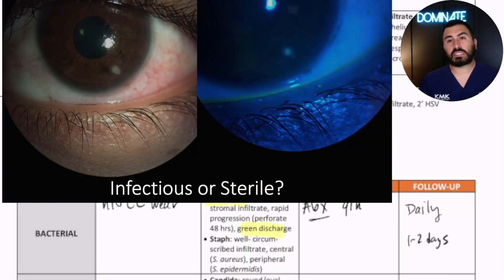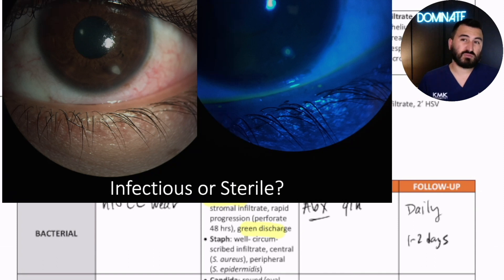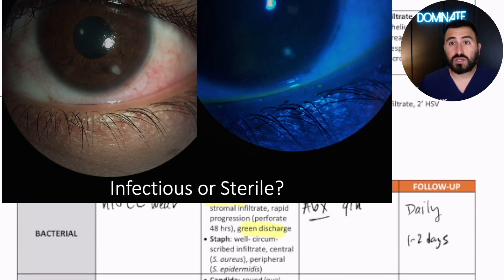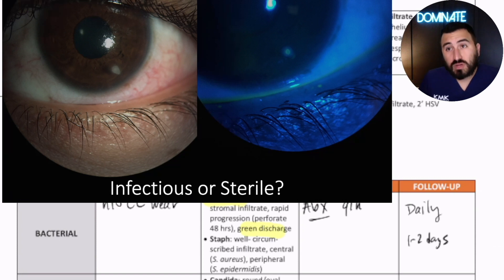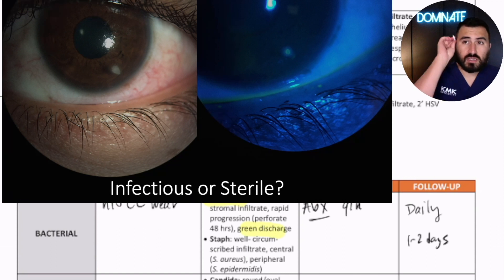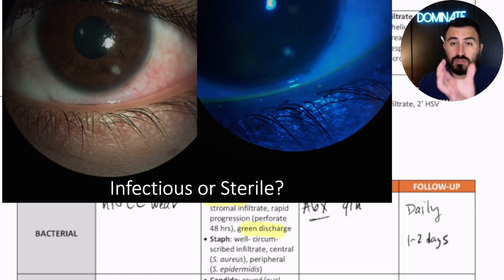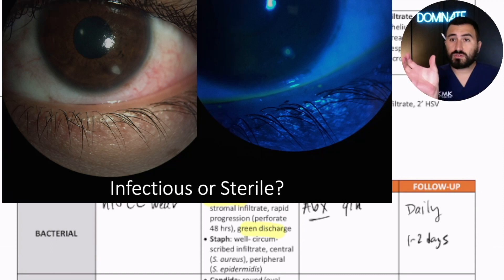Let's say this patient came into your clinic. They have some redness, they were getting ready for work and they saw this white dot on their eye. They're a contact lens wearer — they slept in their contact last night. What you'll see here is the infiltrate there on the white light picture on the left. And you go over to the right and there's actually an epithelial defect there.